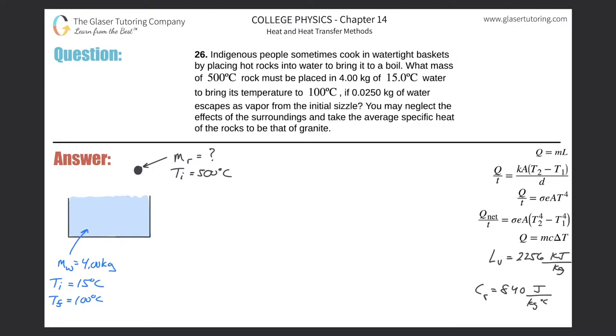Number 26. Indigenous people sometimes cook in watertight baskets by placing hot rocks into water to bring it to a boil. What mass of 500 degrees Celsius rock must be placed in 4 kilograms of 15 degrees Celsius water to bring its temperature to 100 degrees Celsius? If 0.025 kilograms of water escapes as vapor from the initial sizzle, you may neglect other whatever.